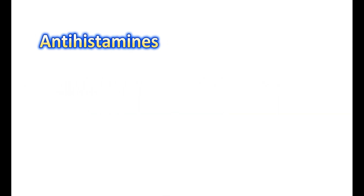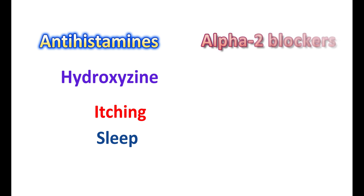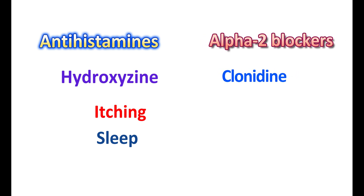Among other medications, hydroxyzine is a widely used option. It is primarily used to control allergic reactions like itching and skin redness, and it can also induce sleep. However, it can also reduce anxiety symptoms through sleep induction. Similarly, alpha-2 agonists like clonidine can also control anxiety symptoms by reducing sympathetic activation and controlling panic symptoms.